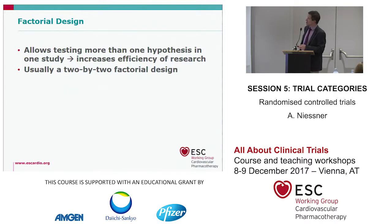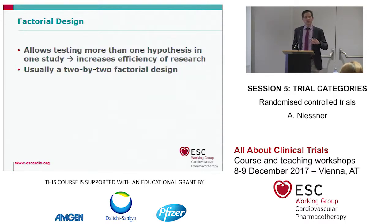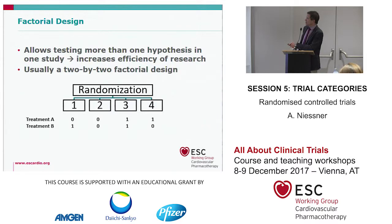Factorial design is another variation that allows testing more than one hypothesis in one study, increasing research efficiency. It's usually a two-by-two factorial design. You need four groups with all combinations of the two treatments: treatment B alone, no treatment, both treatments, and treatment A alone.